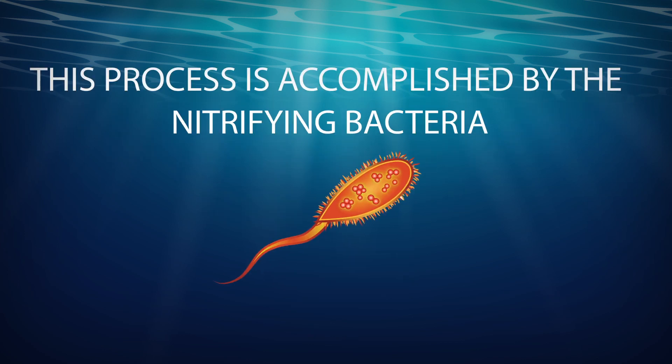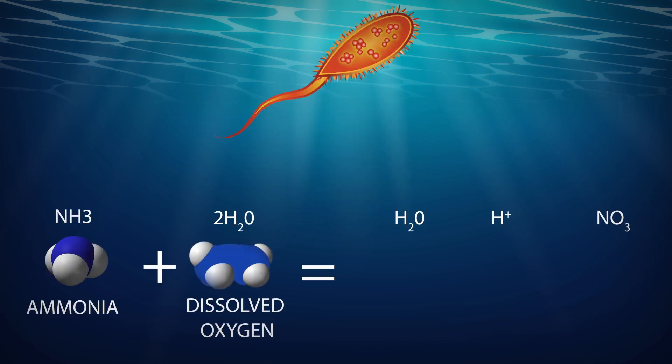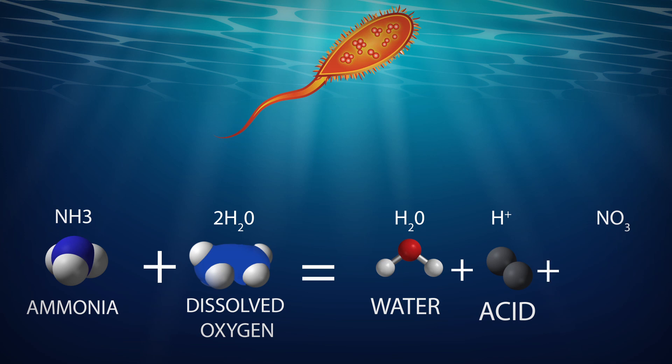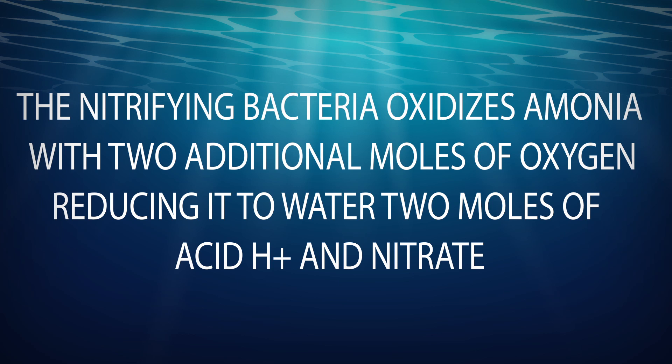This process produces a lot of ammonia, which is very toxic to microbes. This brings us to the next process called nitrification, accomplished by the nitrifying bacteria. The nitrifying bacteria oxidize ammonia with two additional moles of oxygen, reducing it to water, two moles of H⁺, and nitrate.